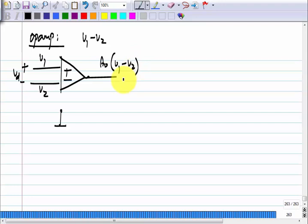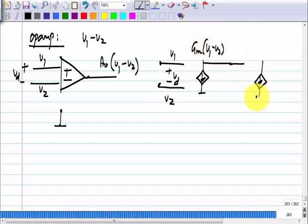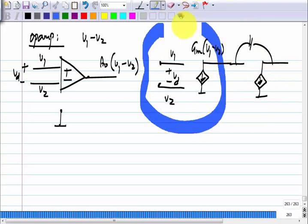This is basically what we want to get. We have a model using control sources where we first get gm times V1 minus V2, with a two stage structure. At the heart of the op amp, we have essentially a control source which responds to the difference between two voltages with respect to ground.